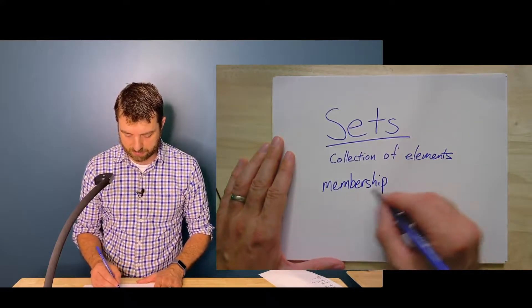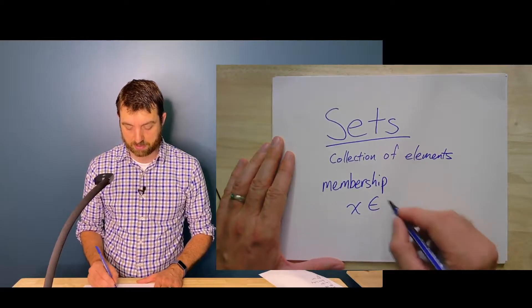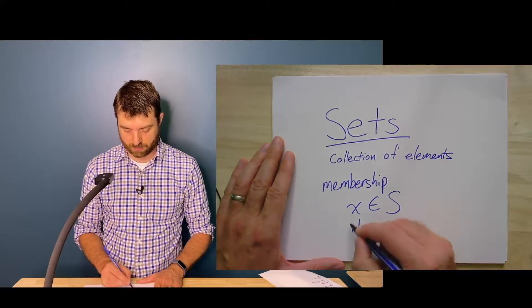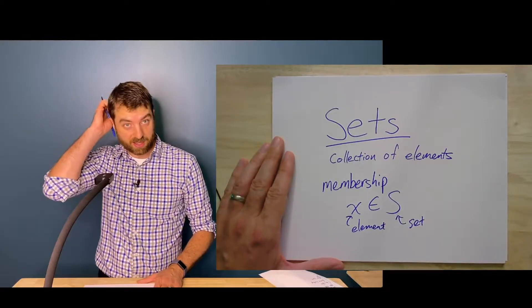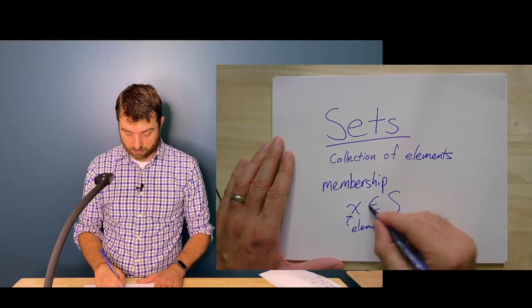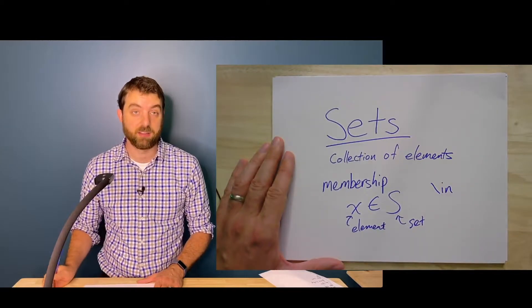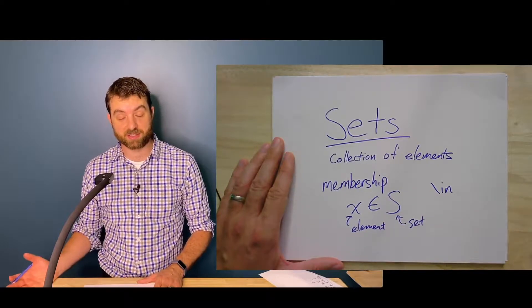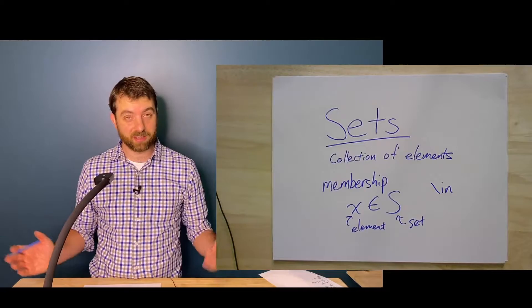And so we'll say, for instance, that some element X is in a set S where this is an element, right? And this is a set. So this symbol right here, if you're going to write it in LaTeX, it's a backslash in. And if you're going to pronounce it, if you see this in a sentence, you would say X is in S. That simple. You can also say X is an element of S.